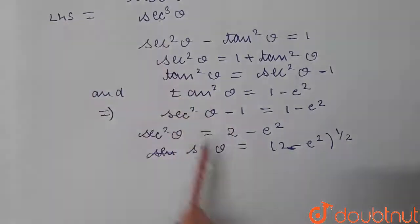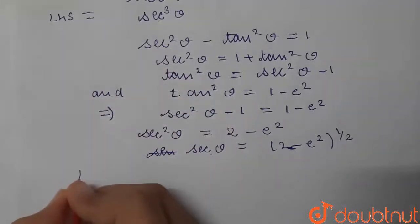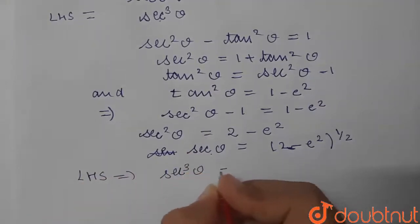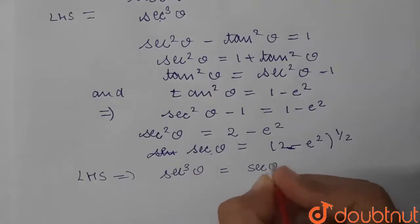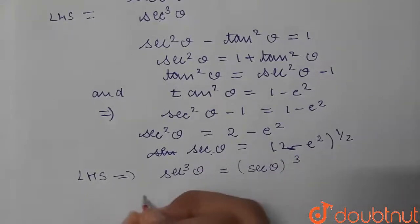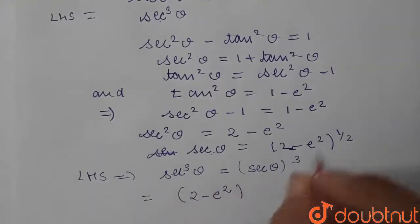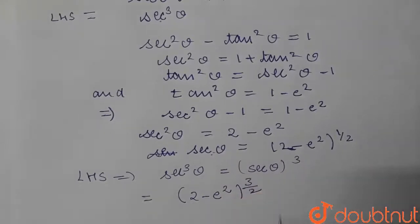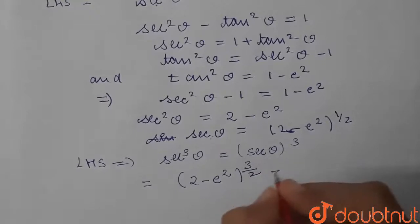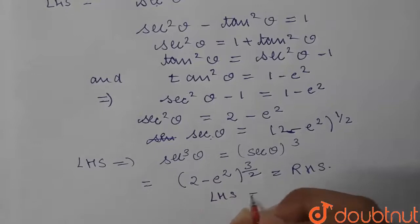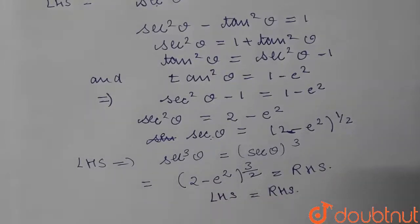Now we got the value for sec theta. We will put this value in the left hand side. The left hand side is sec cubed theta, which can be written as sec theta whole cube. The sec theta value is 2 minus e squared to the power 1 by 2, and cubing it gives the power 3 by 2. So left hand side equals 2 minus e squared to the power 3 by 2, which is what we were asked to prove. Left hand side equals right hand side. This is the required answer — hence proved. Thank you.